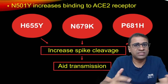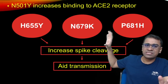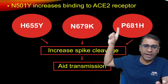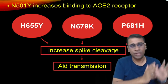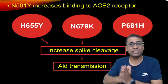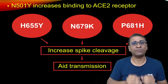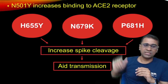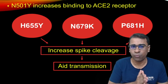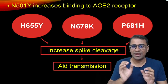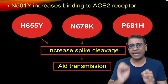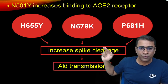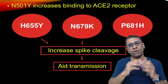Because of this change in the spike protein, the N501Y mutation increases the affinity of this virus to bind to the ACE receptor, meaning this virus is now infecting more people. More importantly, three other changes — H655Y, N67K, and P681H — are causing increased spike cleavage, because of which there is more and more transmission of this virus.